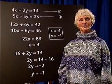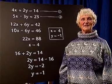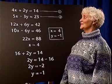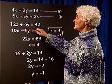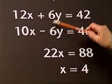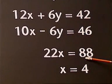In rule 2 we either add or subtract the two equations to eliminate the y terms. In this case we will add the two equations as the signs are different. 22x, the y terms cancel out, equals 88.